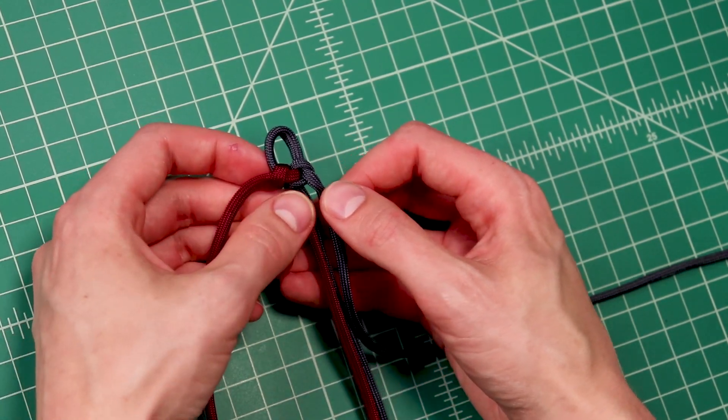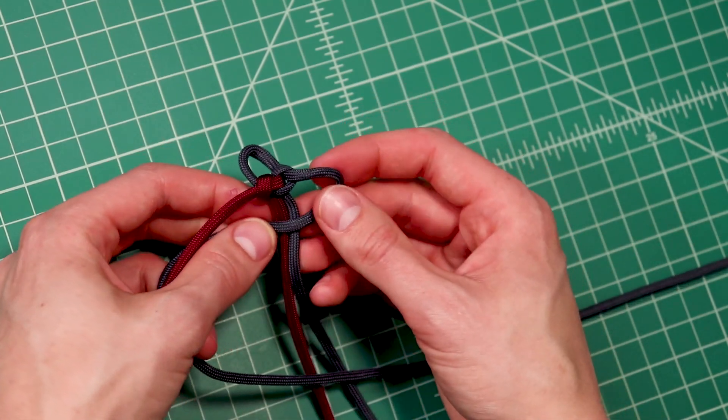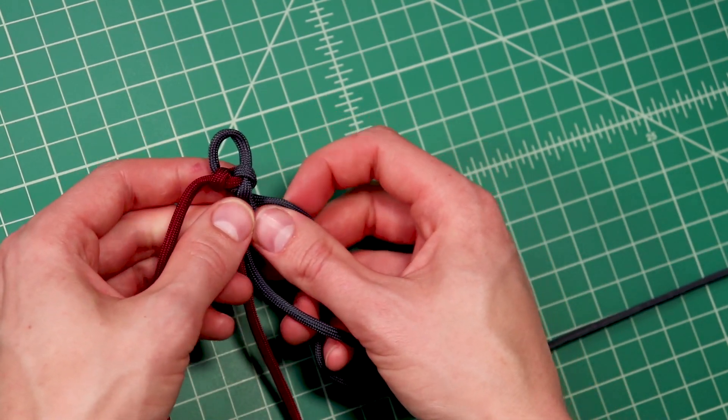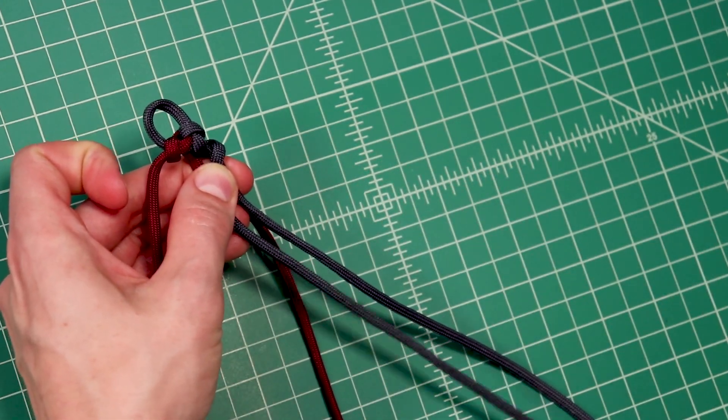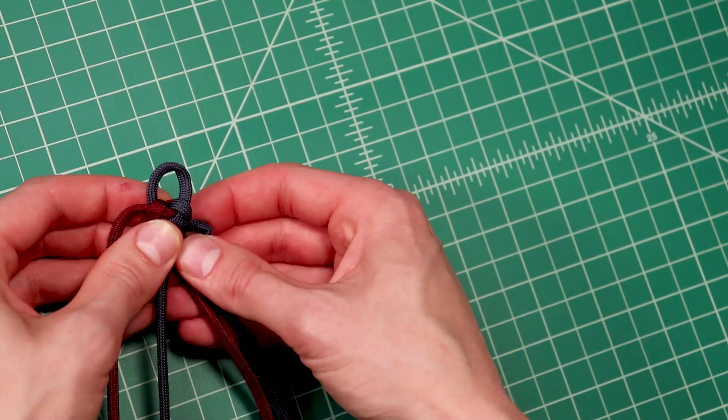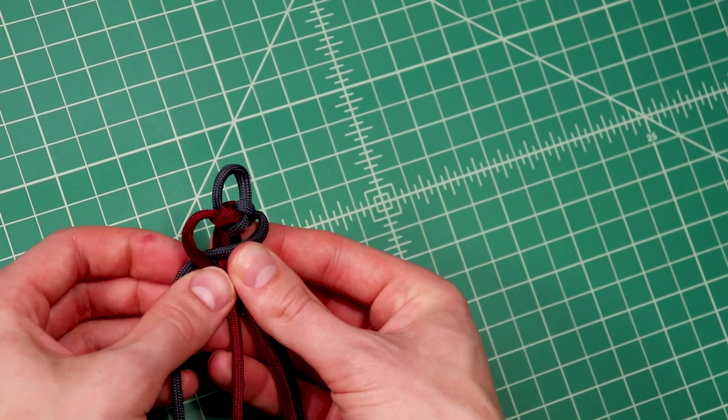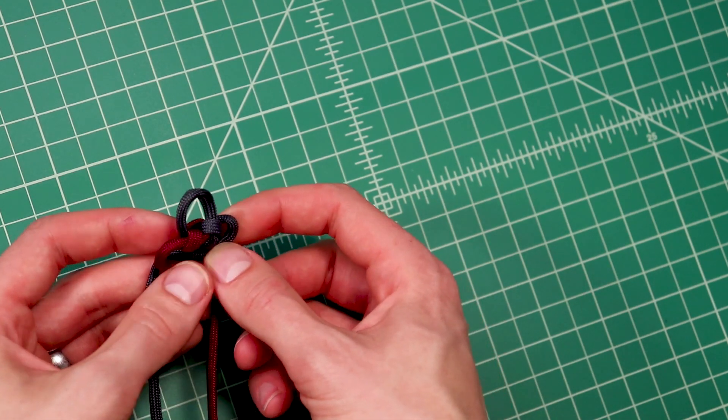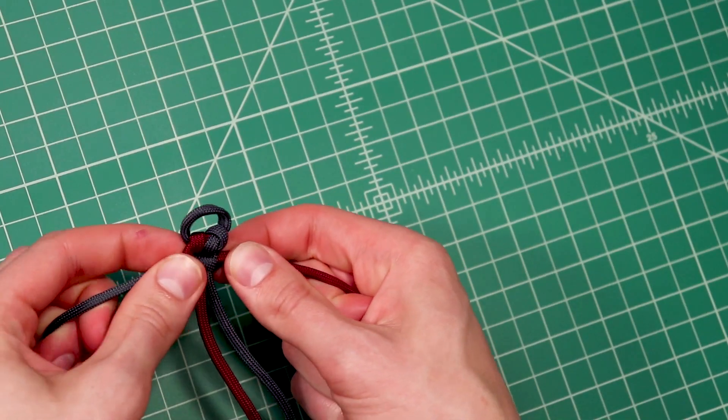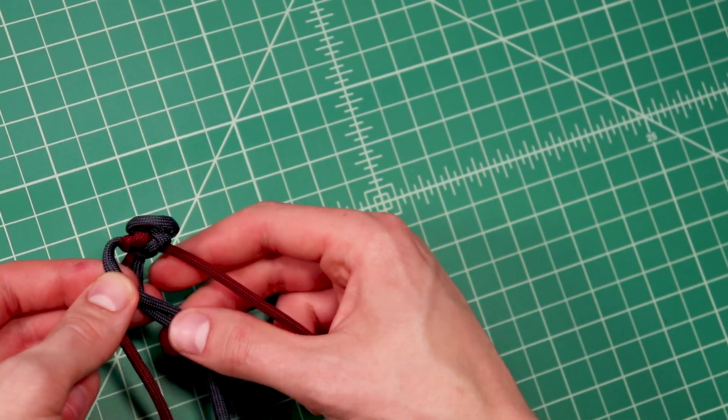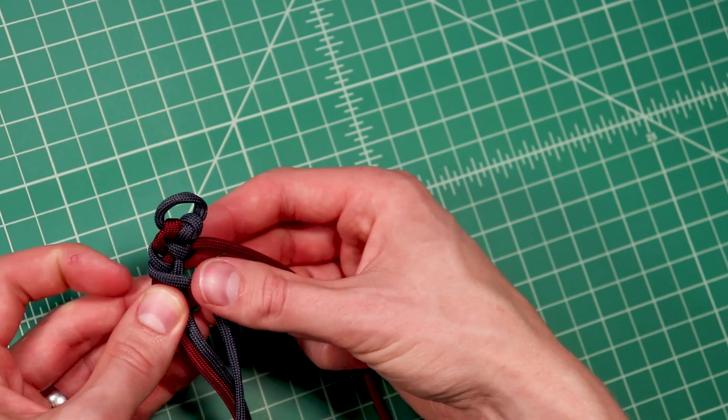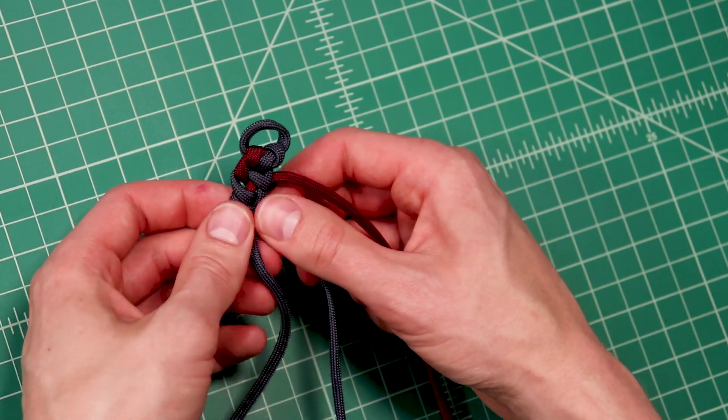And now we're going to go into this modified cobra. So where you would put one color across the top, in this bracelet we're going to go once around the core strand and then across the top. So I'll do that again if you didn't catch it this time. Then just like the cobra, that second color goes over the top of the gray cord around the back and up through the loop, like that there.